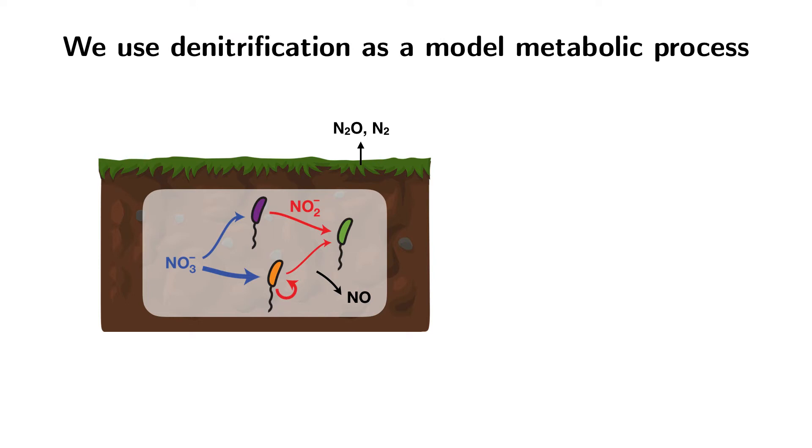Rather than starting with the soils, we wanted to start in a simpler context in laboratory experiments. We chose denitrification as a model metabolic process to study. Bacteria which do denitrification convert nitrate (NO3) to dinitrogen gas (N2) through a series of several intermediates, the first of which is nitrite (NO2).